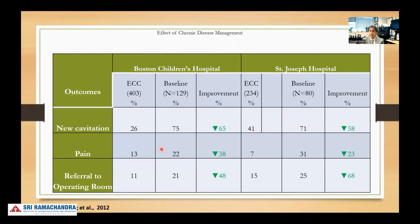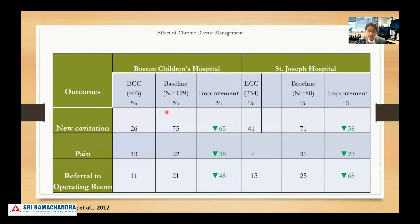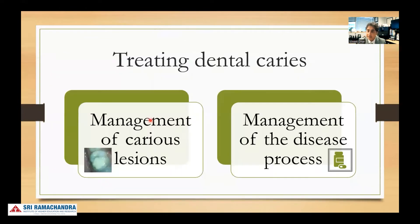Dr. Ng's study looked at three outcomes in two different centers — new cavitation, pain, and referral to the operating room. They used disease management strategies based on the risk assessment of the patient: low, moderate, and high. That included restorative care but also other strategies at home and in office, including different recall frequencies for high-risk patients and six-month recalls for low-risk patients. What they noted is that by simple disease management strategies, they were able to reduce new cavitations, pain, and referral to the operating room at both Boston Children's and St. Joseph hospitals. This shows that disease management strategies were really effective in controlling ECC.